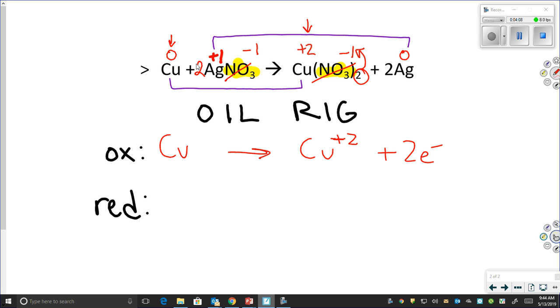But we're going to be recapturing that in our reduction reaction. So, if we look at our silvers, we have two silvers, each one with a plus one charge, and we are going to be making two silvers with a zero charge.